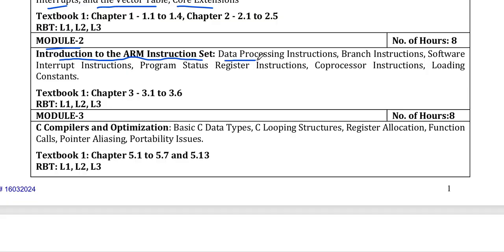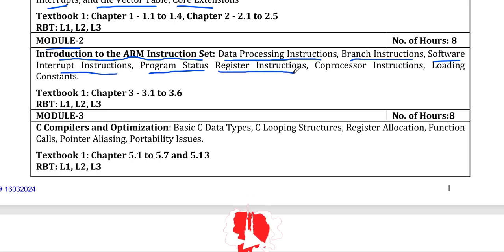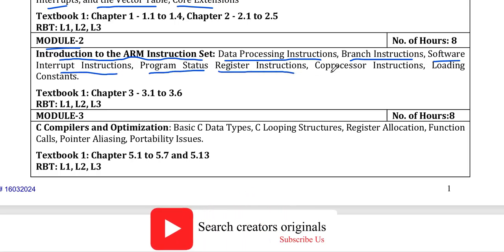In module 2 we can see introduction to ARM instruction set, which includes data processing instructions, branch instructions, software interrupt instructions, program status register instructions, and coprocessor instructions.